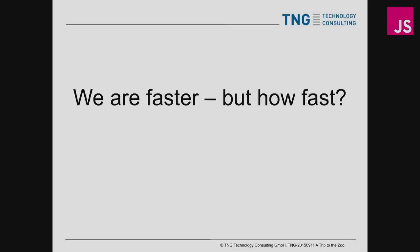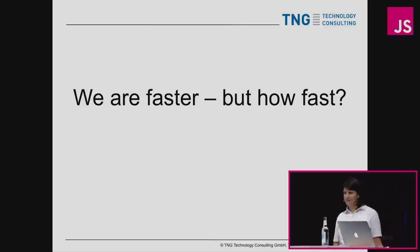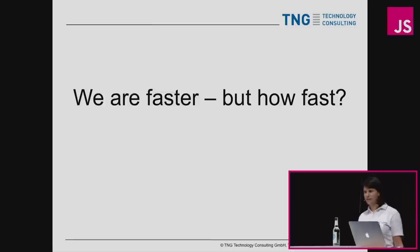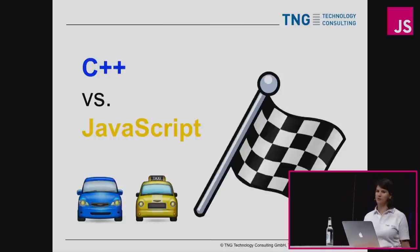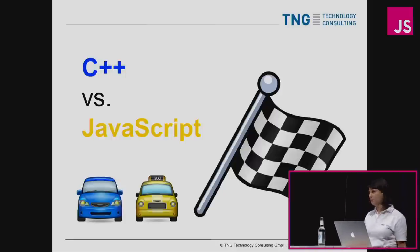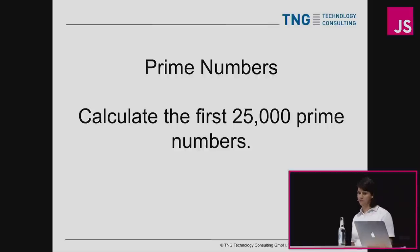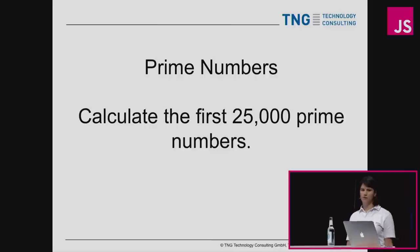We are faster compared to an older version of ourselves, but does that actually mean we are fast? We are faster than 20 years ago, but are we fast? Let's compare to something where we know it really is fast — a race between C++ and JavaScript, because we know C++ is fast. The race track: computing the first 25,000 prime numbers.